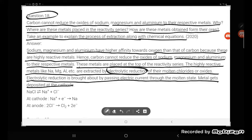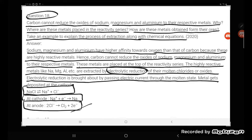NaCl converts into Na+ and Cl-. At cathode: Na+ + e- → Na. At anode: 2Cl- → Cl2 + 2e-.